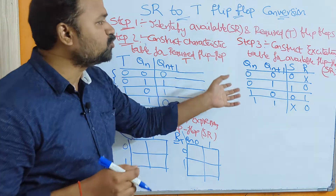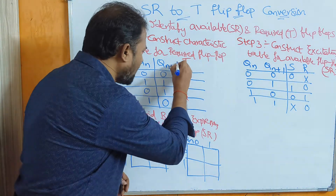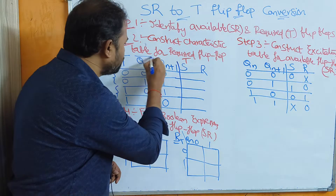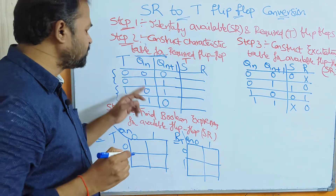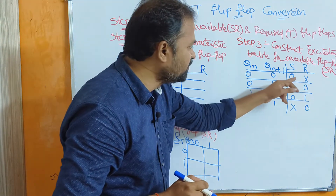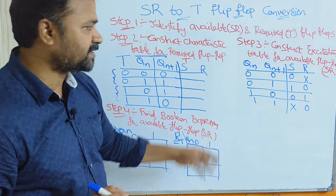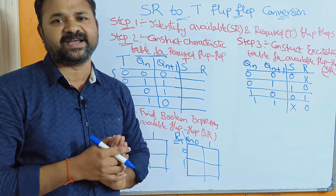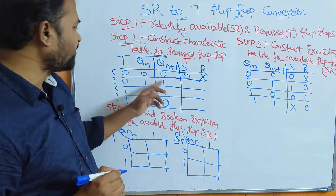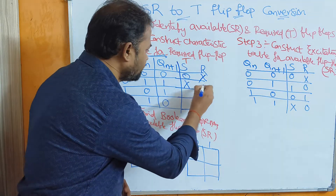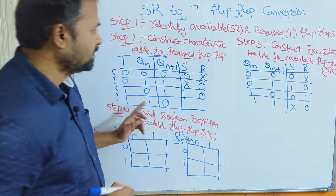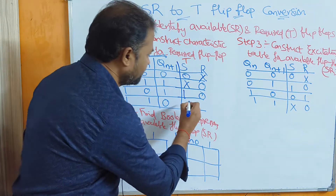According to the excitation table of SR flip-flop, we fill in the S and R values. Qn=0, Qn+1=0 gives S=0, R=don't care. Qn=0, Qn+1=1 gives S=1, R=0. Qn=1, Qn+1=1 gives S=don't care, R=0. Qn=1, Qn+1=0 gives S=0, R=1.